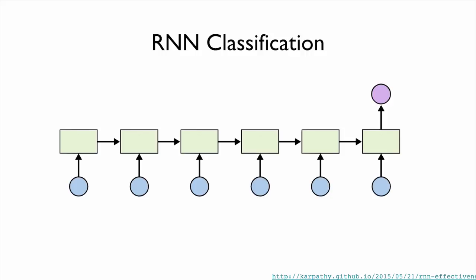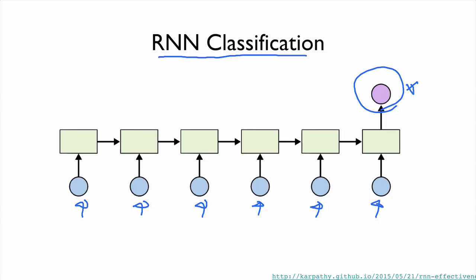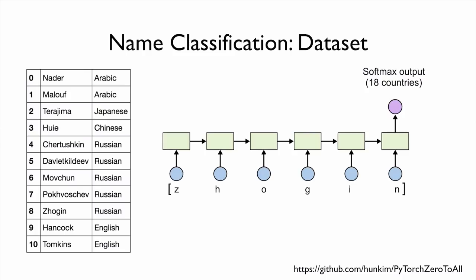However, in this lecture, we are going to focus on one specific model or task — it's called RNN classification. We're going to connect all RNNs such that we have time series input, but for the output, we're using only the last one as output. This can be used for time series classification or sentiment analysis. Specifically, we are using a name classification task for this RNN model.